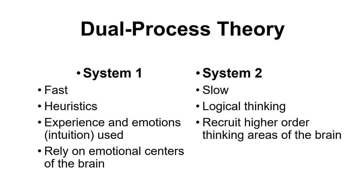We might use System one when we encounter a situation we've experienced before and think we know how to solve it quickly. If we encounter a novel situation we've never seen, we may need to rely on System two — it takes longer, but we can logic our way through to a new solution. We're not saying one is better than the other; we tend to use both back and forth. The way information is presented can affect which system we use, and sometimes we can force ourselves to slow down, activate System two, and work through something logically.